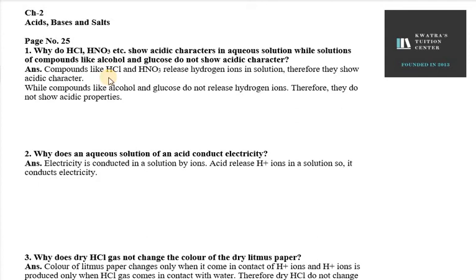Hello everyone, let's start with chapter number 2, that is Acids, Bases and Salts. The first question asks: why do HCl and HNO3 show acidic character in aqueous solution, while solutions like alcohol and glucose do not show any acidic character? If we talk about HCl, it can form H+ and Cl- ions.